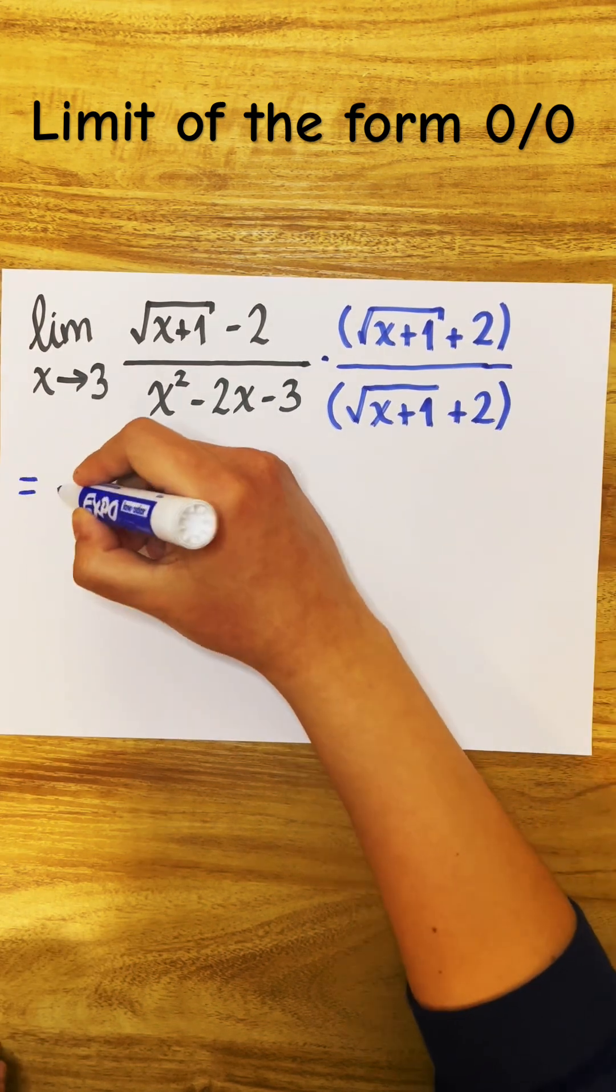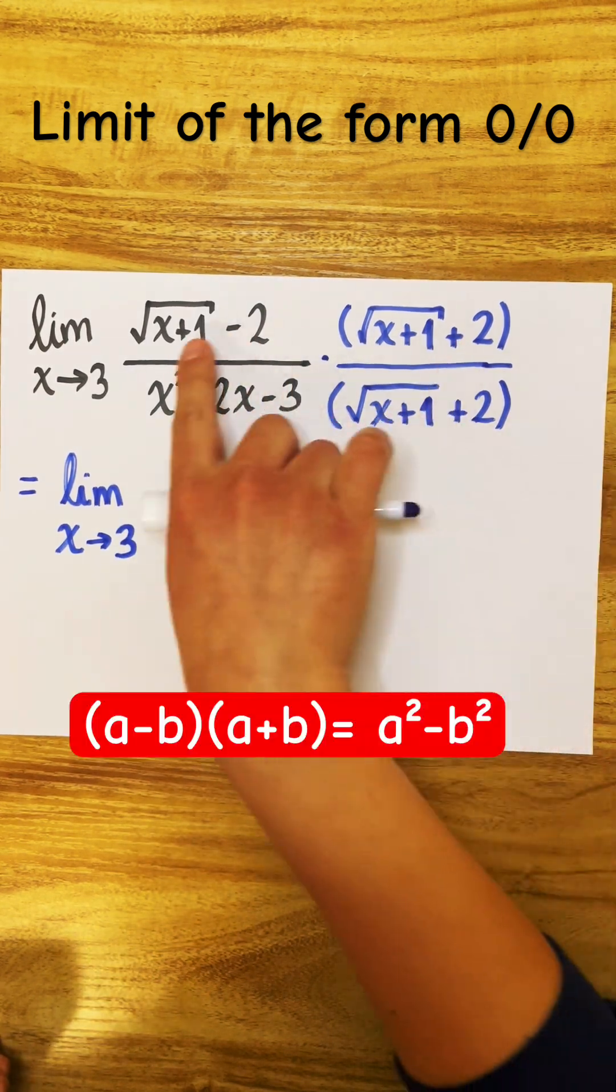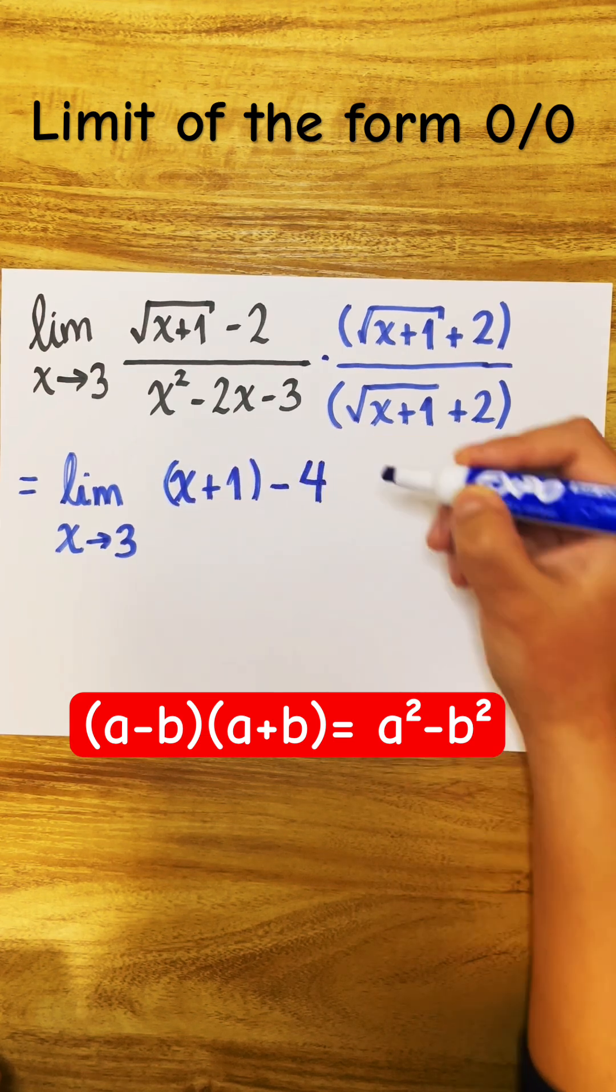Now, in our next step, multiply the things on the top. I'm going to apply the difference of squares. Square root of x plus 1 squared is x plus 1 minus 2 squared, which is 4.